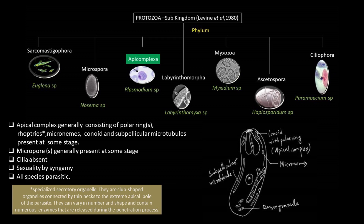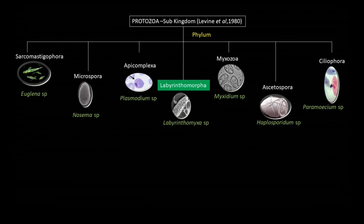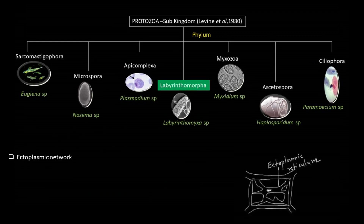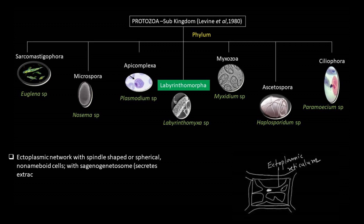Then comes Labyrinthomorpha: ectoplasmic network with spindle-shaped or spherical, non-amoeboid cells with sagenogenetosome — a unique cell surface organelle that functions as an extracellular matrix-release core. Mostly found in marine and estuarine waters.